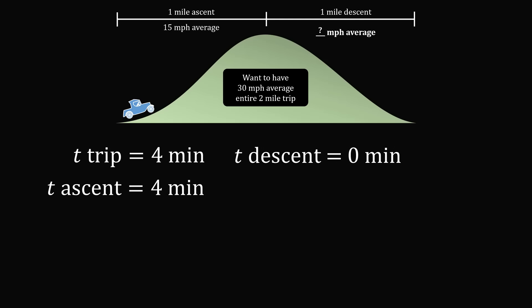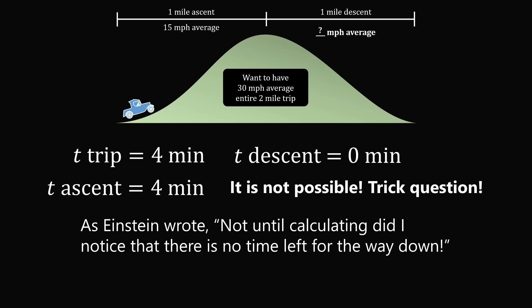But then, we would need to be going infinitely fast, and we know that's not possible because nothing can go faster than the speed of light. In other words, this is not possible. This is a trick question. There's no way to average 30 miles per hour for the entire trip. This puzzle so delighted Einstein, he wrote back that not till calculating did I notice there is no time left for the way down.